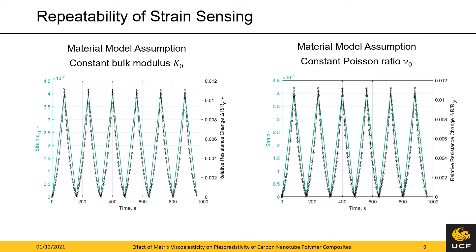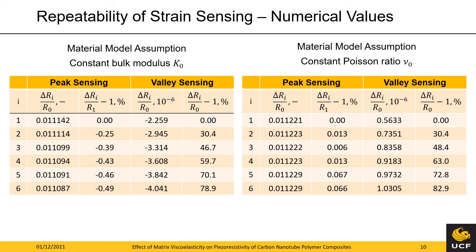Here we see the results of the second load case for each material model. The green color represents the applied strain and the black curves the relative resistance change. No decay of the peak sensing is visible here. Taking a look at the numerical values for each material model under cyclic loading, the table on the left-hand side shows the peak and valley sensing values for the assumption of a constant bulk modulus. The third column, representing the relative change of the peak sensing at peak i compared to the first peak, measures the repeatability of the peak sensing. A small but decaying trend can be observed, whereas the same decay cannot be observed for the assumption of a constant Poisson's ratio represented by the table on the right-hand side.